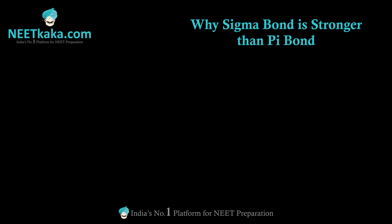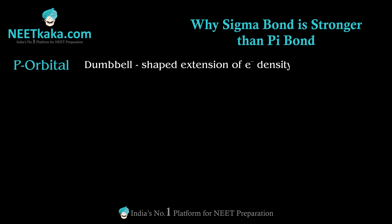In this video we will talk about why sigma bond is stronger than pi bond — very important to understand, as most students and teachers fail to explain this concept. Before we begin, we need to understand the p orbital. A p orbital is a dumbbell-shaped extension of electron density around the nucleus.